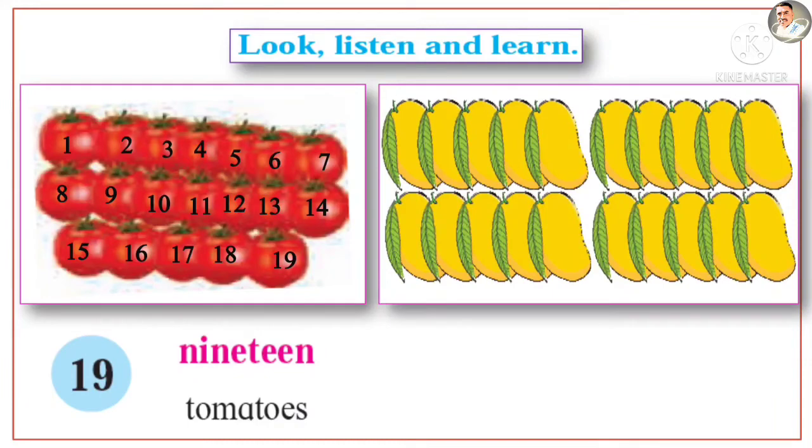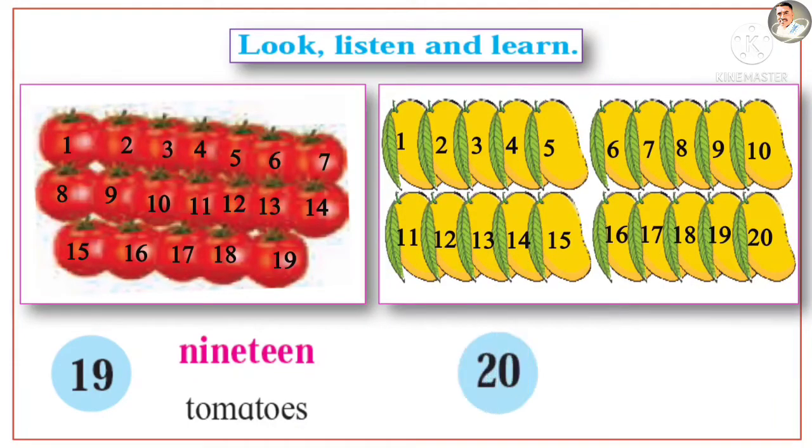How many mangoes are there? 20. Twenty. T-W-E-N-T-Y. 20 mangoes.